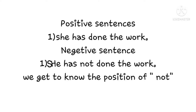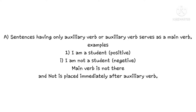Here, we get to know the position of 'not'. The word 'not' is placed immediately after the auxiliary verb. We will also see sentences where the auxiliary verb serves as the main verb. For example, 'I am a student' is positive, and 'I am not a student' is a negative sentence. We don't see any main verb in this sentence, and we can again see the position of the word 'not'.